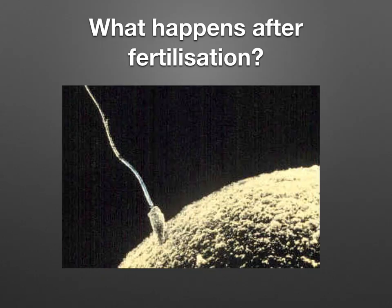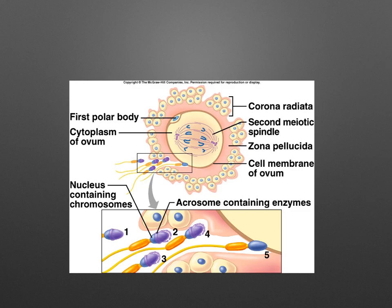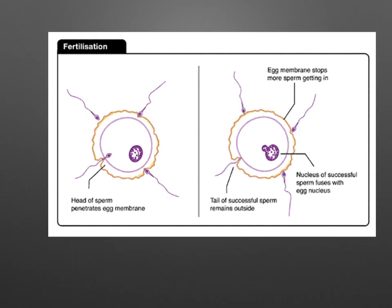If fertilization does occur, the hydrolytic enzymes from the acrosomes of the sperm digest the layer of granulosa cells surrounding the secondary oocyte and also go through the zona pellucida. The secondary oocyte was held in metaphase 2 — when fertilization takes place, it proceeds with and completes meiosis. The second polar body degenerates and the sperm's nuclear material enters the ovum. The ovum produces granules that prevent the entry of other sperm. About 20 hours later, the nuclei combine to form a zygote, which will then start to divide by mitosis.